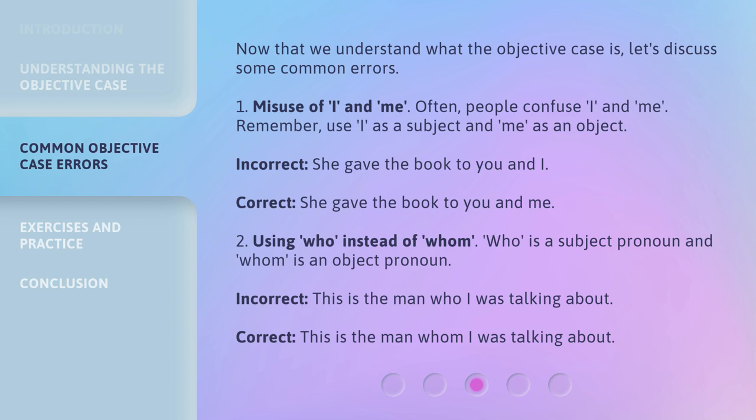Number 2: Using 'who' instead of 'whom.' 'Who' is a subject pronoun and 'whom' is an object pronoun. Incorrect: 'This is the man who I was talking about.' Correct: 'This is the man whom I was talking about.'